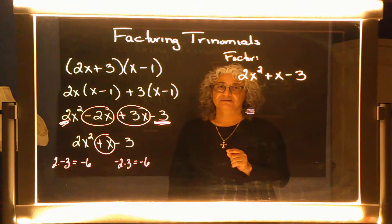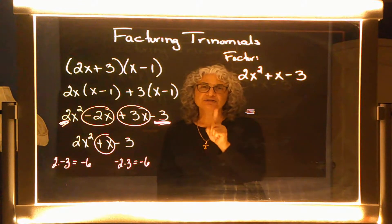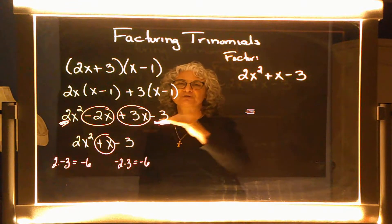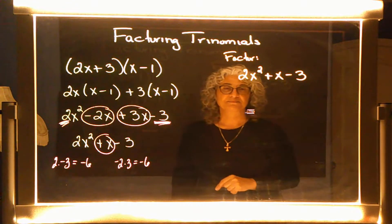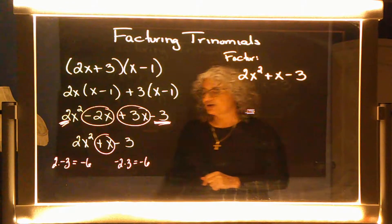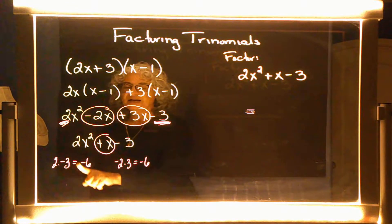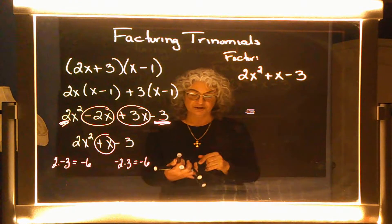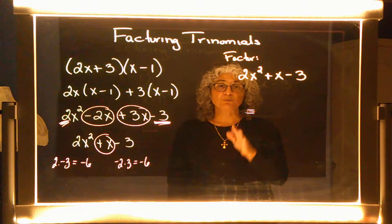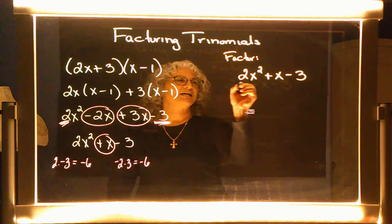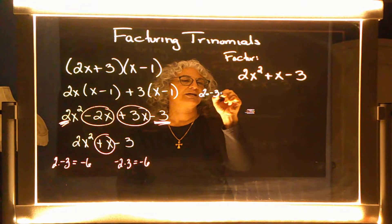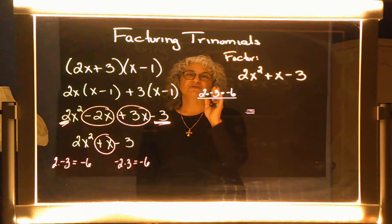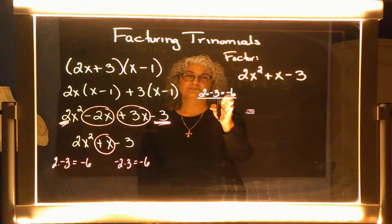There are a lot of possible numbers that would add to this positive one in the middle so I can expand to four terms. But I need to find one combination in particular that will also allow me to continue factoring. The observation is: when I multiply the first and last number I get negative six, and the middle two numbers also multiply to negative six. So we take the first term of two and the last term of negative three and multiply them together to get negative six.